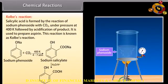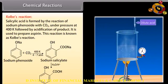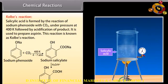Kolbe's reaction: salicylic acid is formed by the reaction of sodium phenoxide with carbon dioxide under pressure at 400 K, followed by acidification of the product. It is used to prepare aspirin. This reaction is known as Kolbe's reaction.